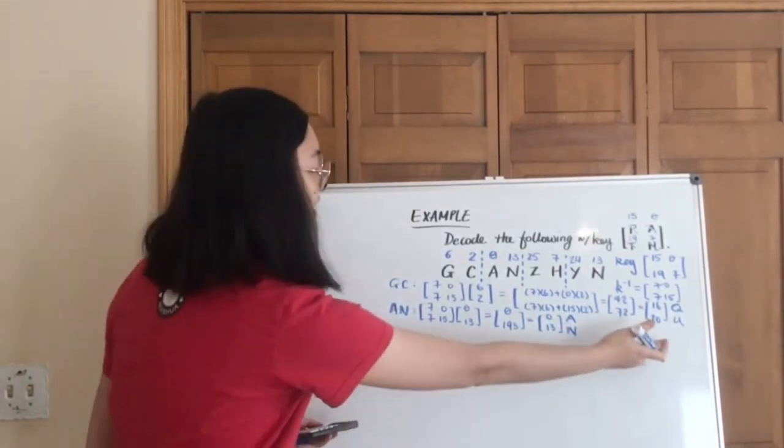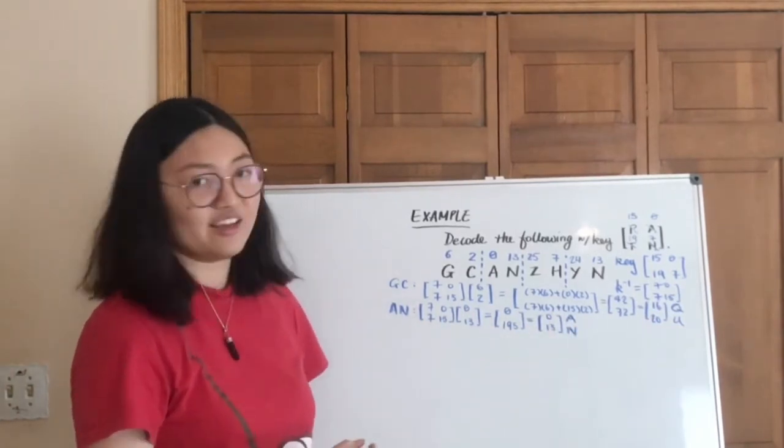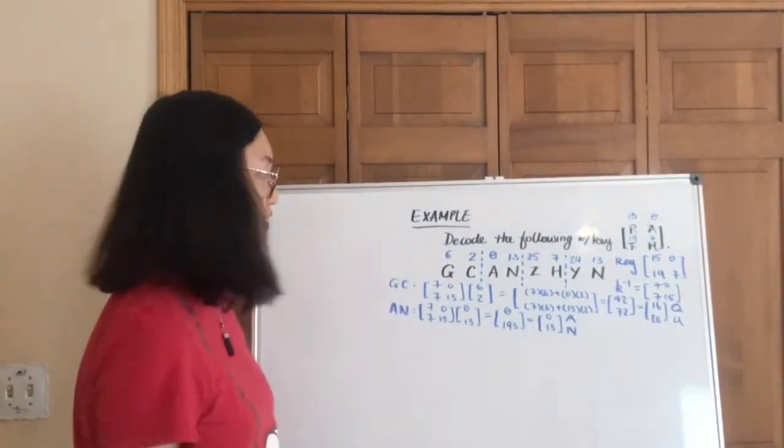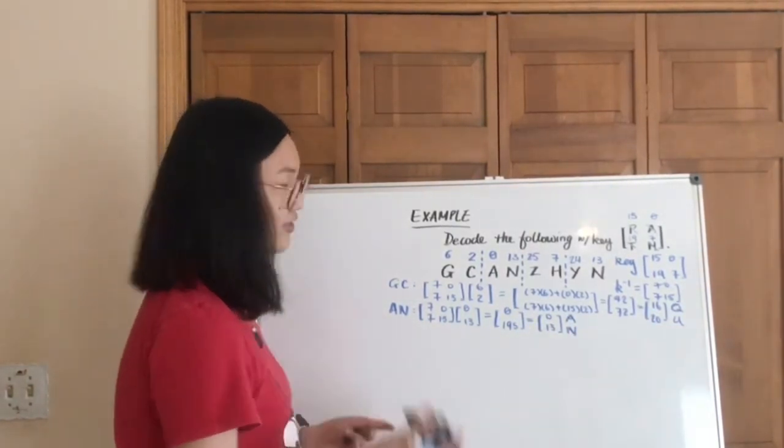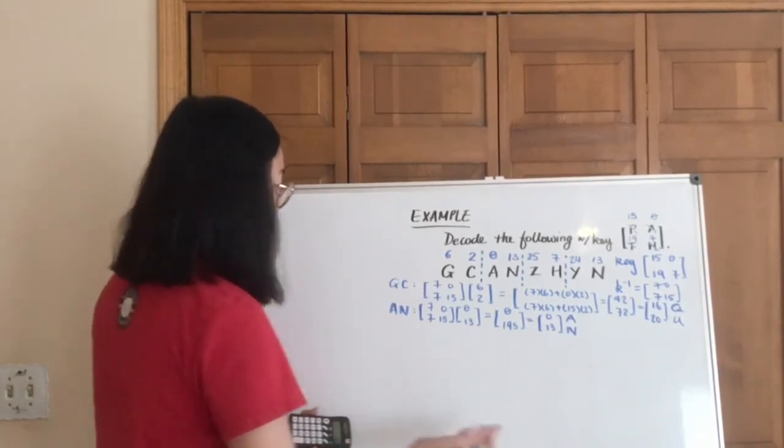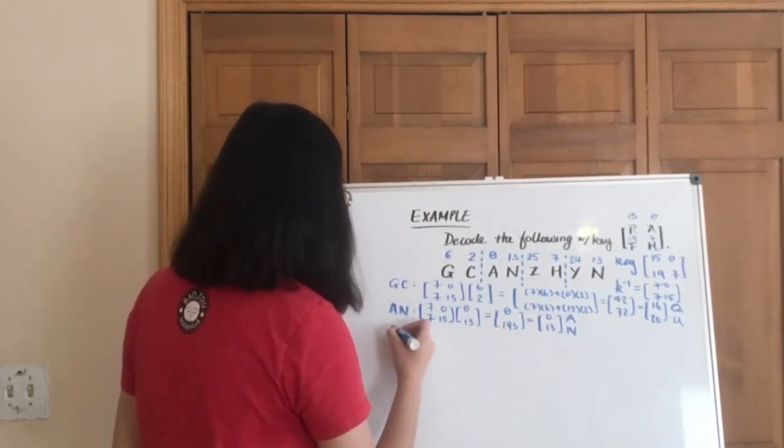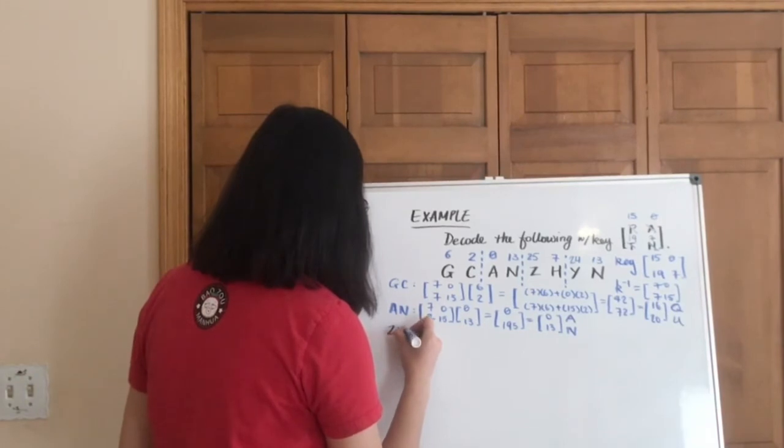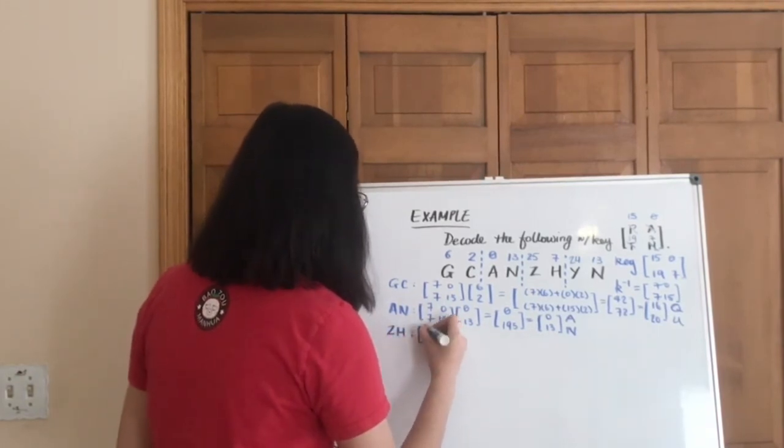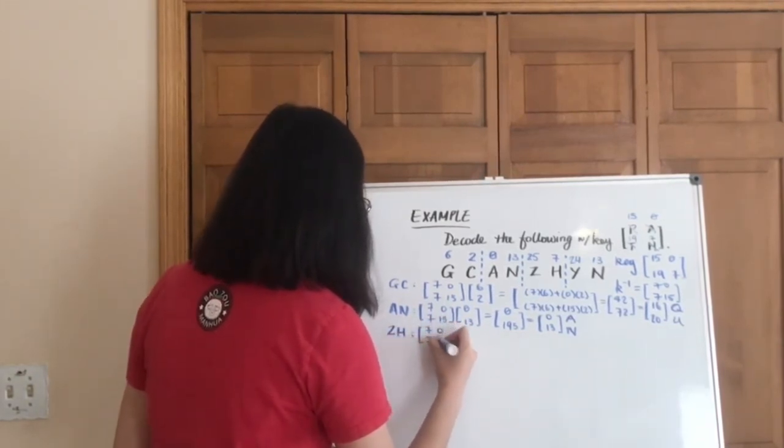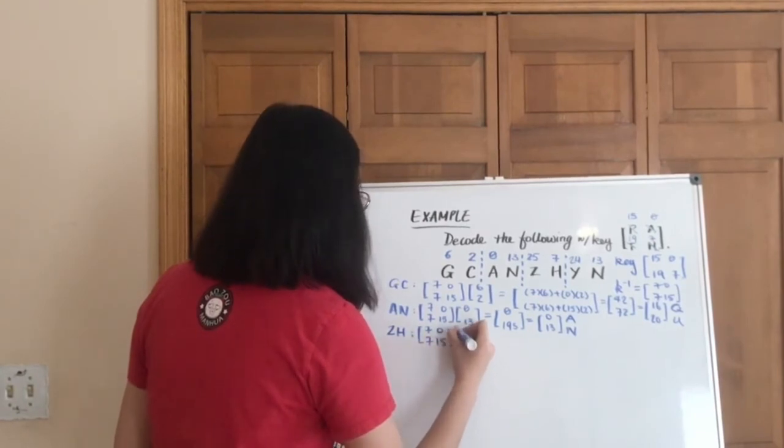So I'm writing all the plaintext in capital letters, but you don't have to if you find yourself confusing the plaintext and the ciphertext. So the small lowercase will be just fine. Moving on to ZH.